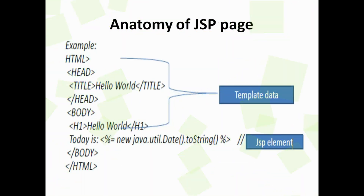Let's see a new concept: the anatomy of a JSP page. A JSP page is a mixture of standard HTML tags, web page content, and dynamic content specified using JSP constructs. Everything except JSP constructs is called template text. A JSP page is made up of template data and syntactic elements, each of which can be composed of various components as illustrated in a diagram.